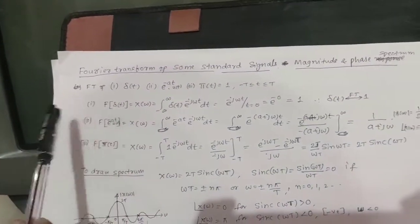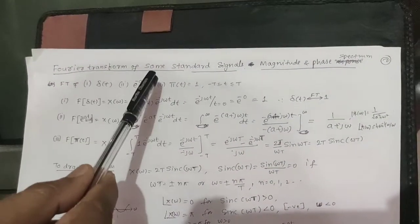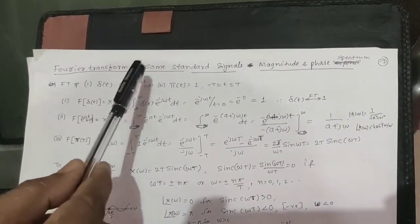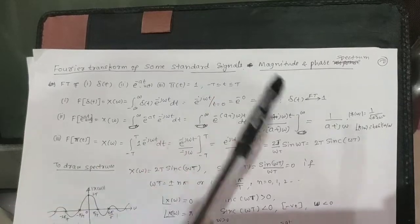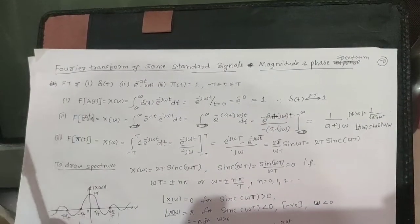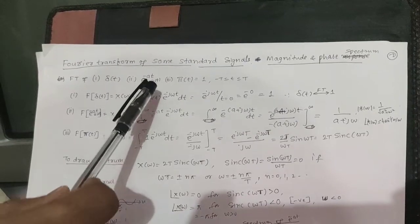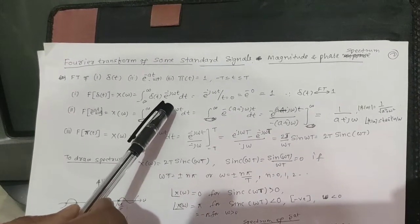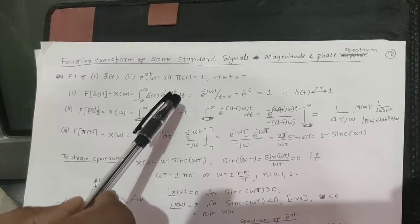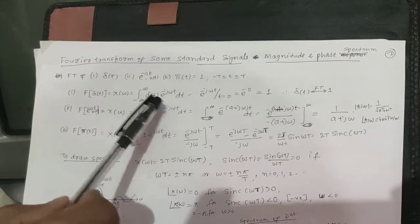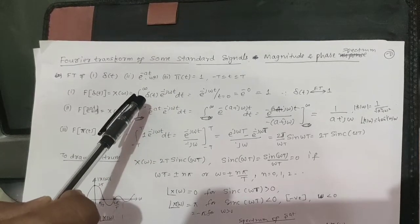Next, we will solve some problems on elementary signals such as the impulse signal, exponential decaying signal, and rectangular signal. For example, the Fourier transform of the impulse signal is X(ω) = ∫ from −∞ to +∞ δ(t) e^(−jωt) dt. But δ(t) is present at only one point, at t = 0.